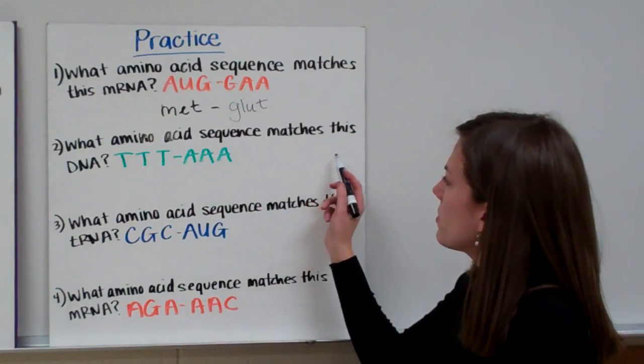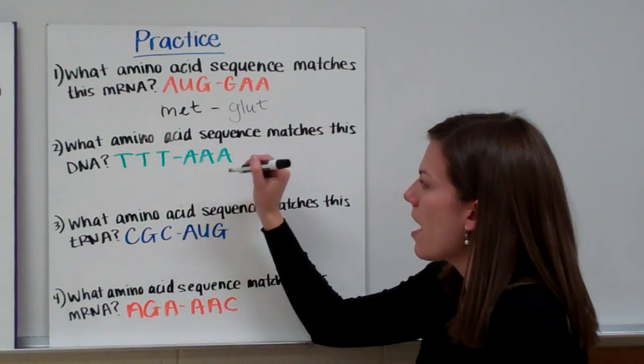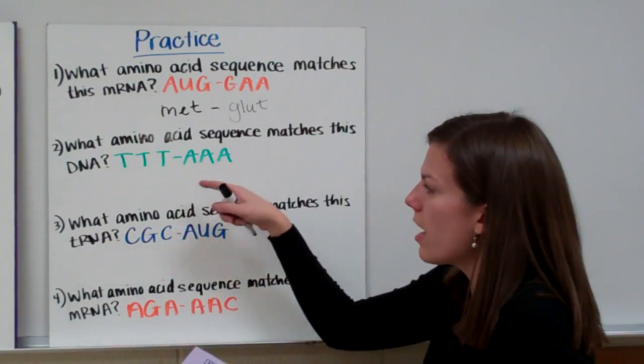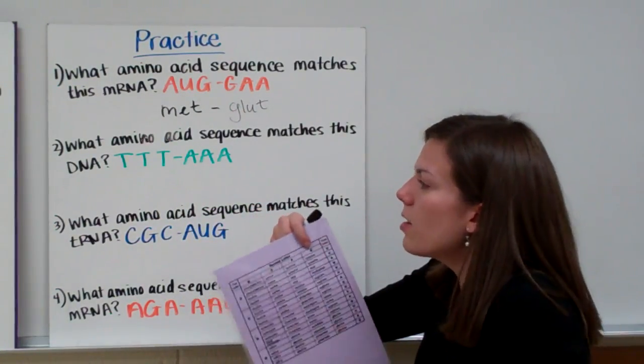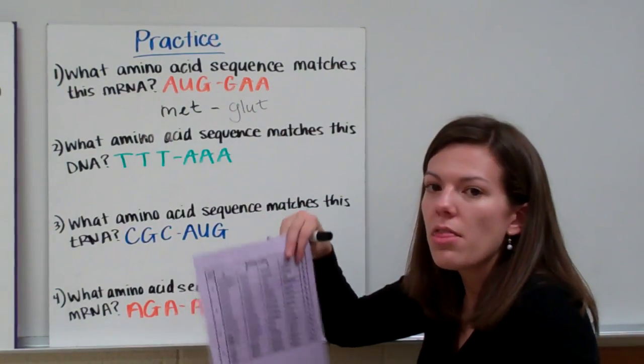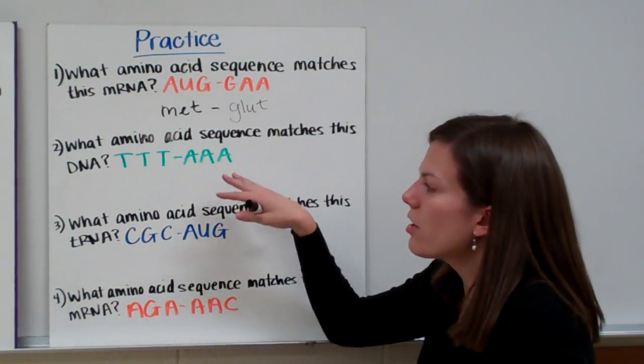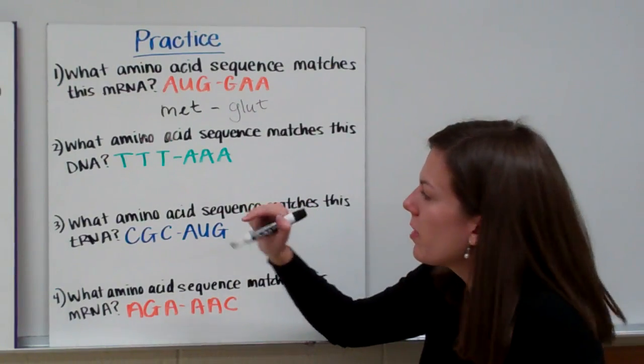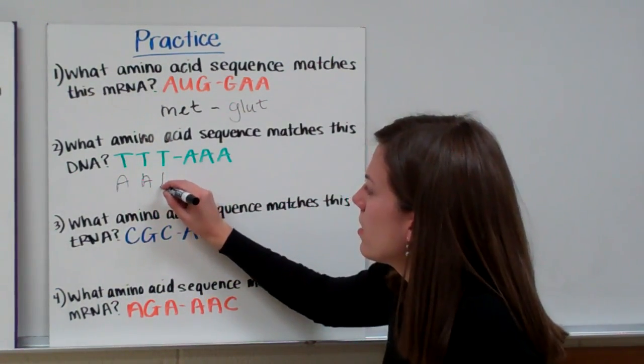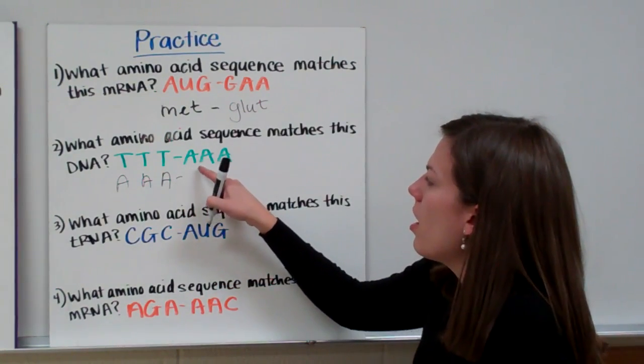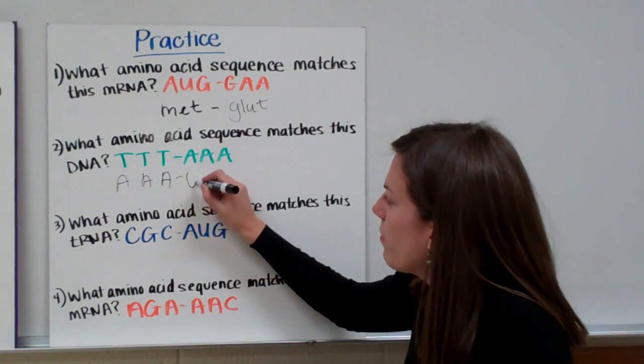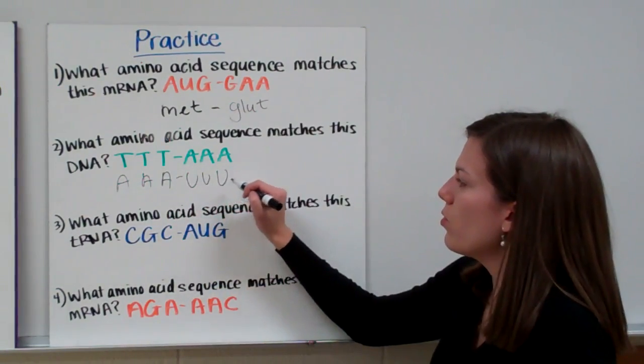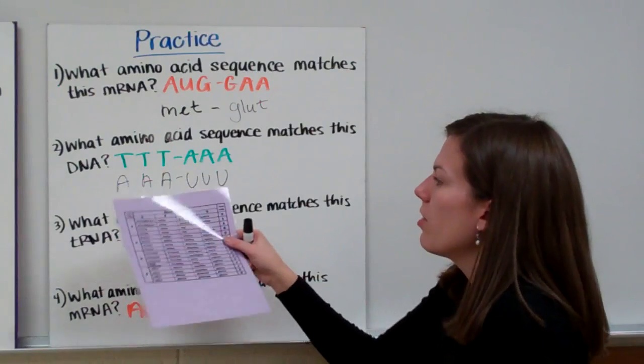Our second question says, what amino acid sequence matches this DNA? So we have TTTAAA. As a reminder, you can only use mRNA sequences on this codon chart. So we cannot use DNA on this chart. So instead, we change our DNA into mRNA first, and then we look it up on our codon chart. So let's find out which letters match for mRNA. A always hooks with T, C always hooks with G. So our T's would be A's in mRNA. And then, remember, in RNA we have U's instead of T's. So right here we would have U's. If this was DNA, we would have TTT. But instead we have UUU. So our mRNA sequence is AAA, UUU.